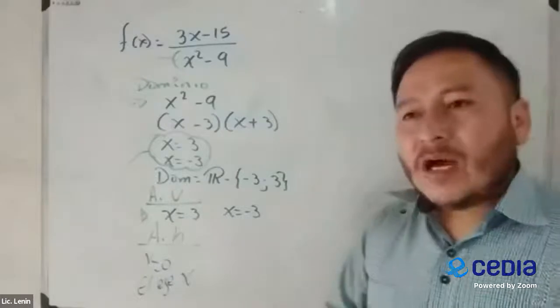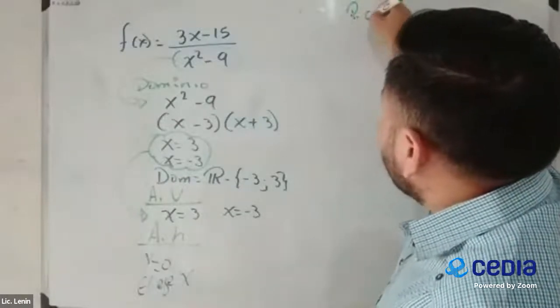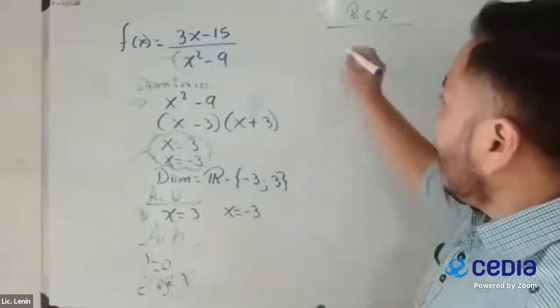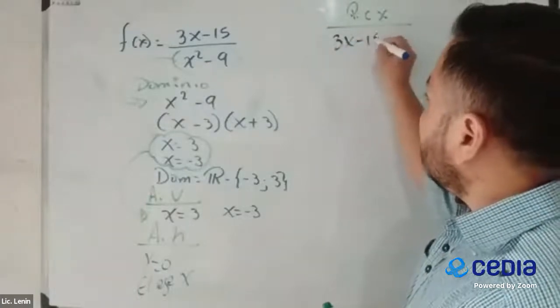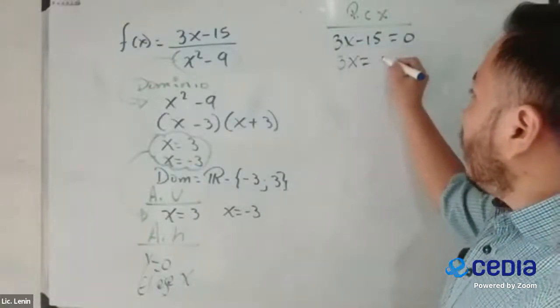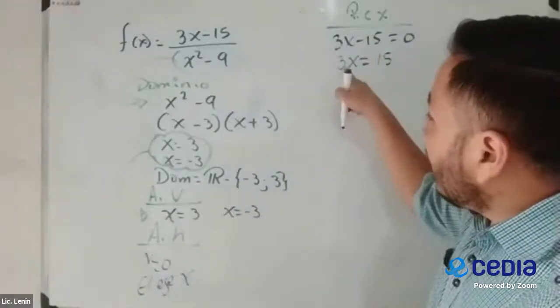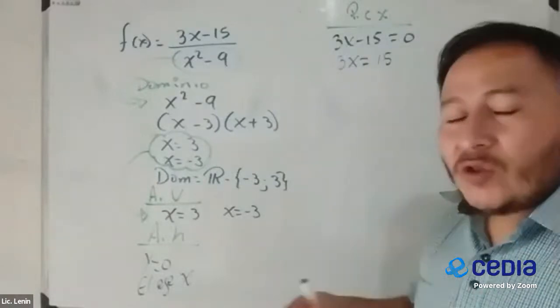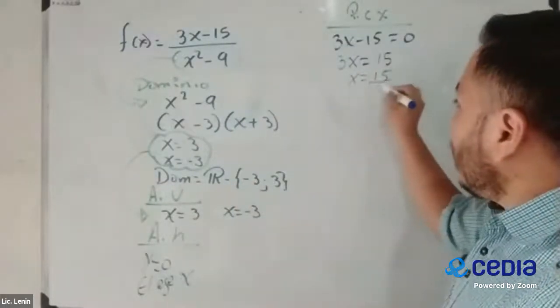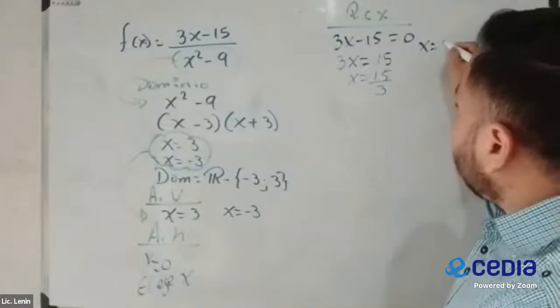Ahora pasamos a nuestros puntos de corte. Punto de corte en x, para encontrar el punto de corte en x, tomamos el numerador y lo igualamos a cero. 3x menos 15 es igual a cero. El 15 está restando, pasa a sumar. Aquí, mucho ojo, no es que está sumando. Cuando no hay un signo en medio de un número y una variable, significa que está multiplicando. Está pasando a dividir. x es igual a 15, dividido para 3. Entonces, x es igual a 5.